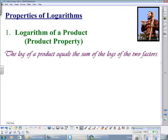The first property is the product property. The log of a product equals the sum of the logs of the two factors. And the one thing to remember with all of this is that logarithms at their basics are essentially exponents. So if you remember the exponent rules, x to the m times x to the n is going to be the same thing as x to the m plus n.